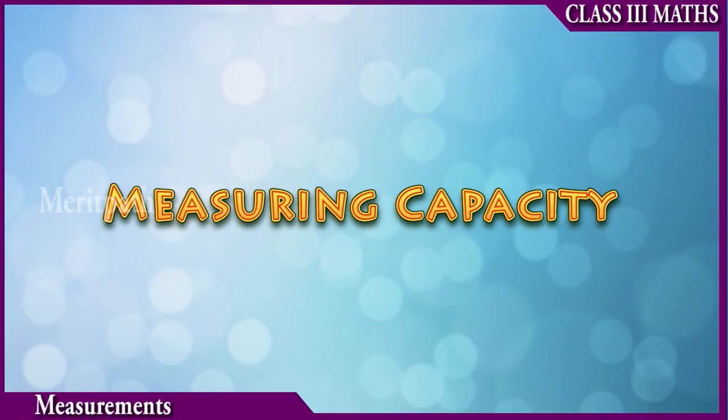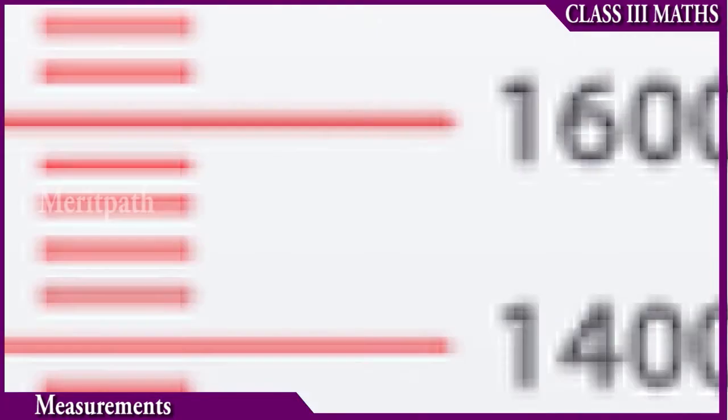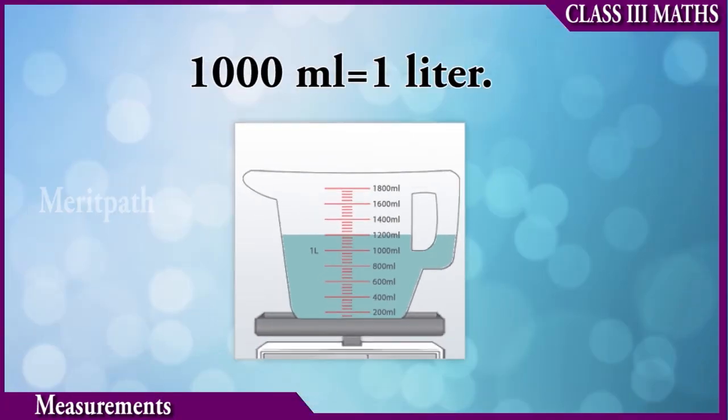Measuring capacity. 1000 milliliters is equal to 1 liter.